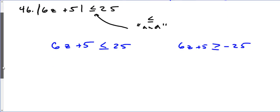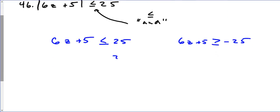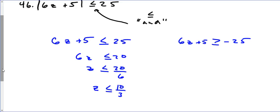For each equation we solve it. Subtracting 5 from both sides gives us 6z ≤ 20, then dividing by 6 gives z ≤ 10/3. On the other side, we get 6z ≥ negative 30, and dividing by positive 6 — we don't switch the sign — gives z ≥ negative 5.